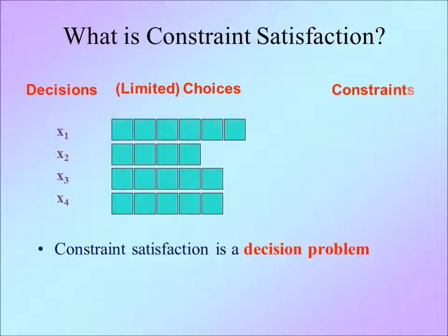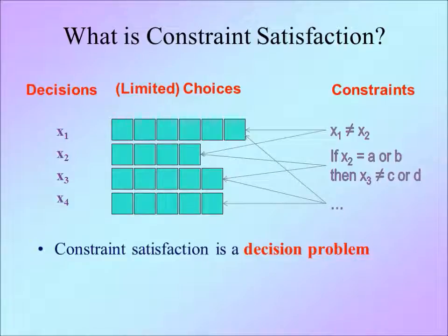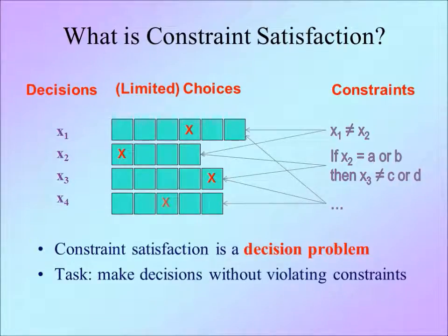Decisions constrain each other. Constraints can take any form. In the example, if you send a technician to job A, he can't be sent to job B at the same time. You have to allow travelling time from one job to another. This limits the schedule further. Your task is to decide who to do what and when without violating the constraints.